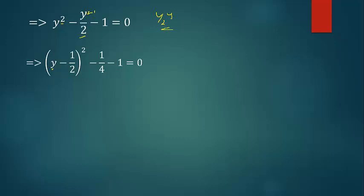We have (y - 1/2)^2. We square the result: (-1)^2 is 1, and 2^2 is 4, so we have 1/4. The next thing is to send this to the other side.